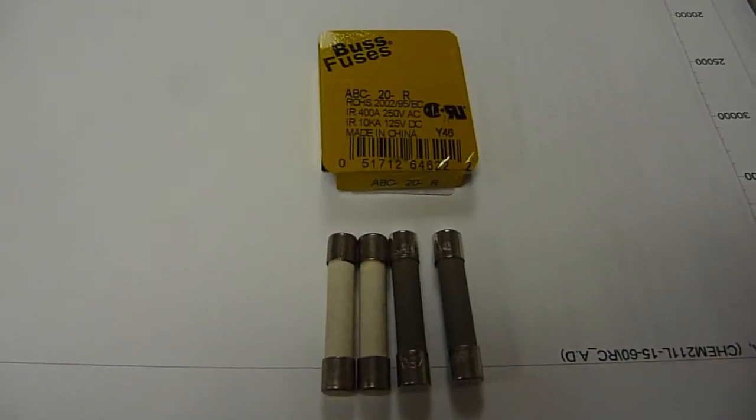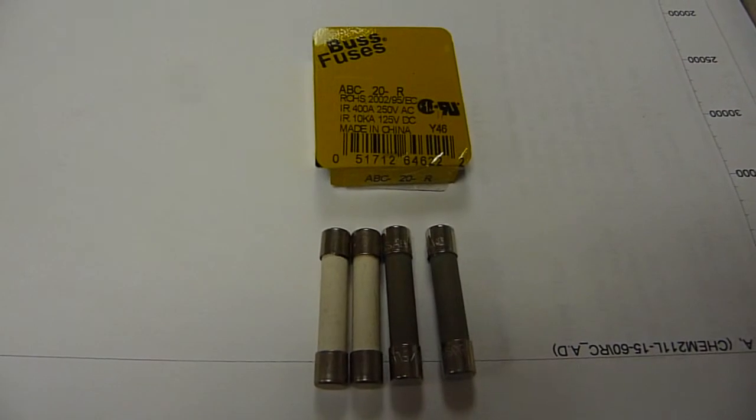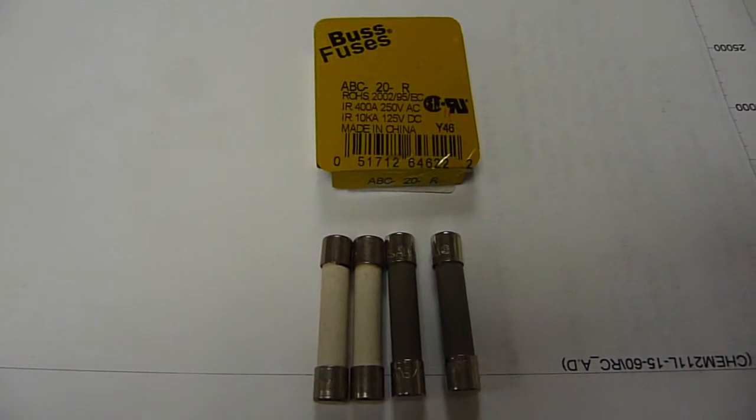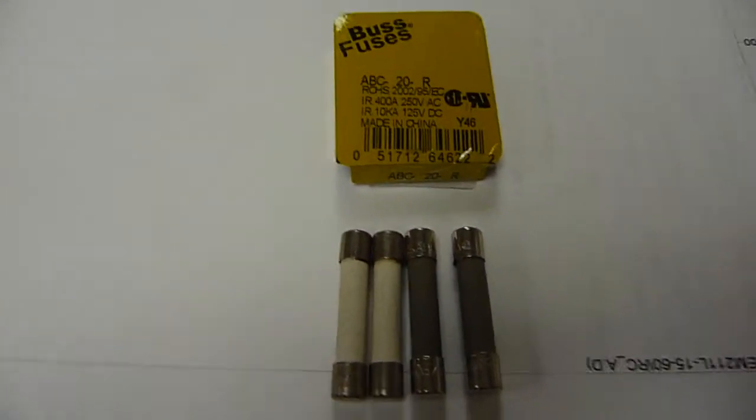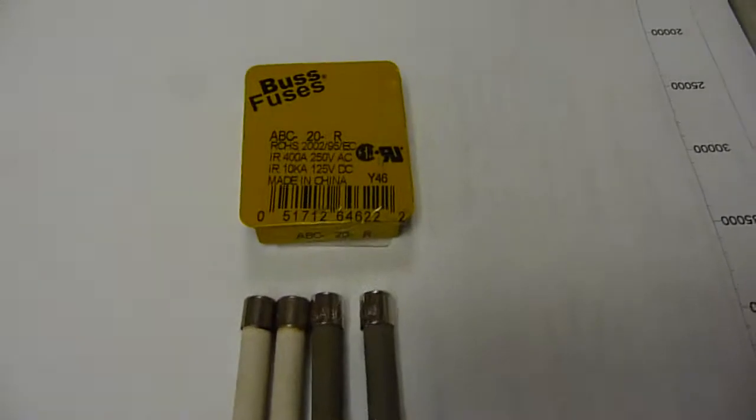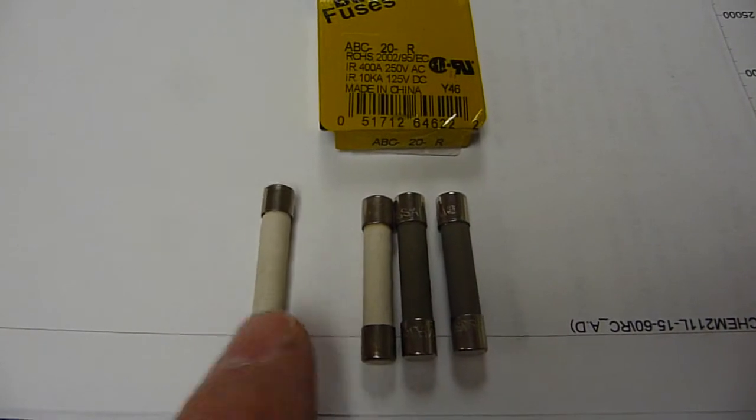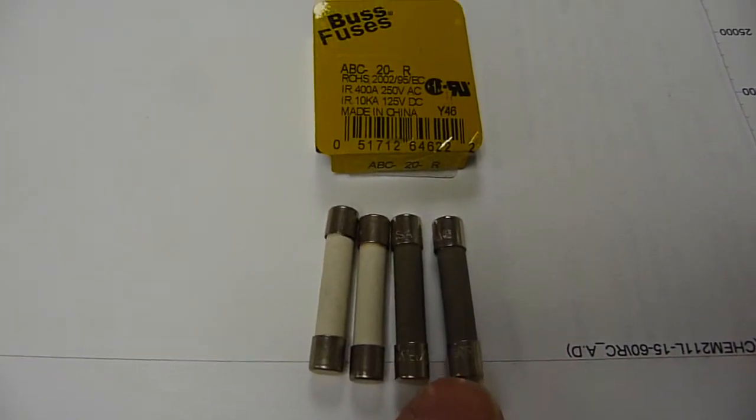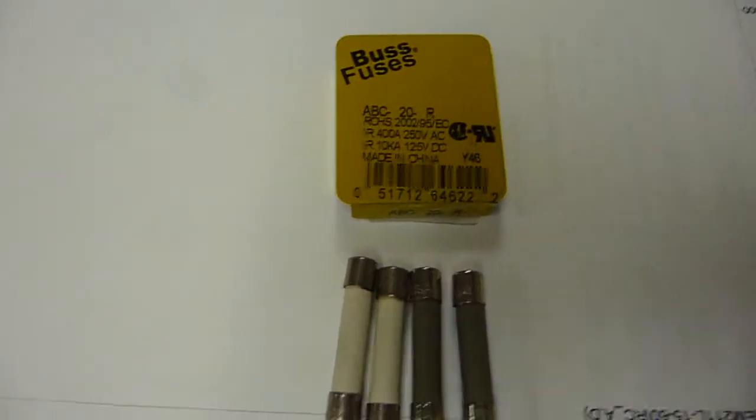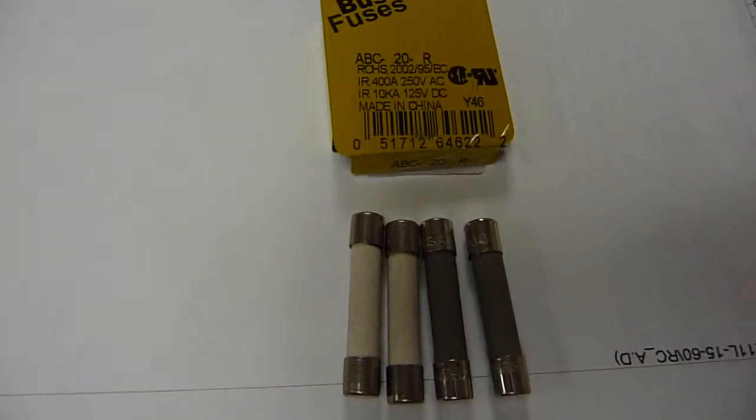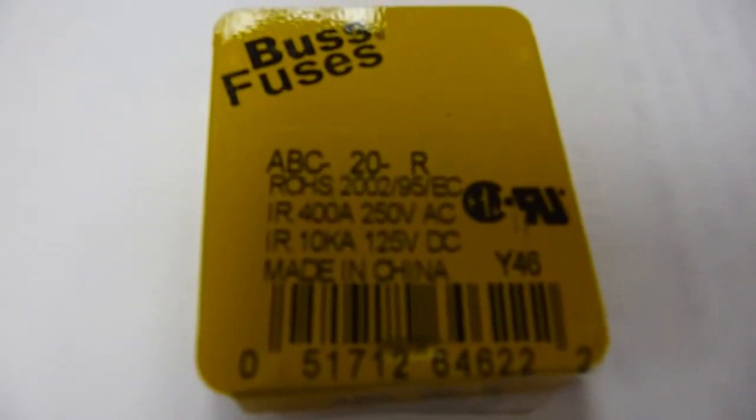I'm replacing the ceramic fuses on the left with 20 amp fuses on the right. Using an ohmmeter, this guy has infinite resistance. This one's okay, and these two are the replacements. Agilent Service Manual recommends replacing them in pairs. So, let's see what happens.